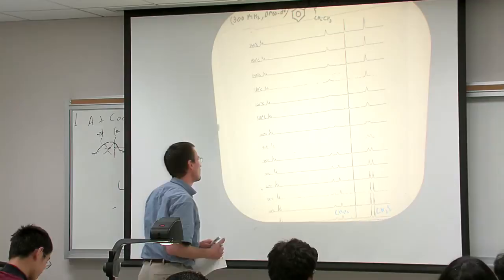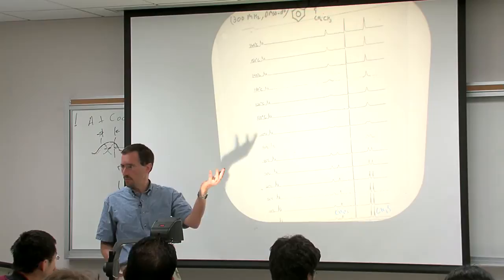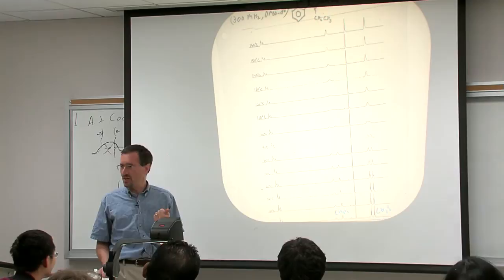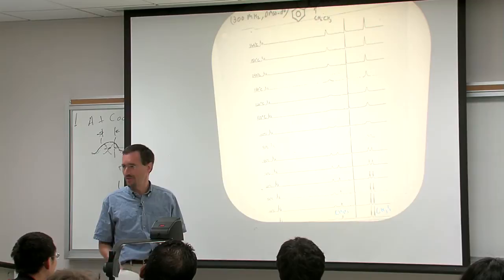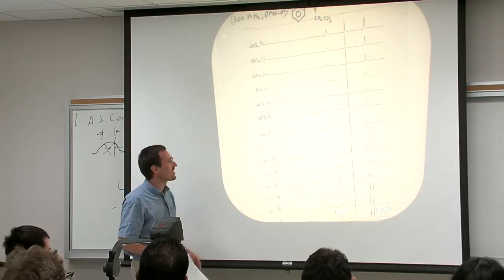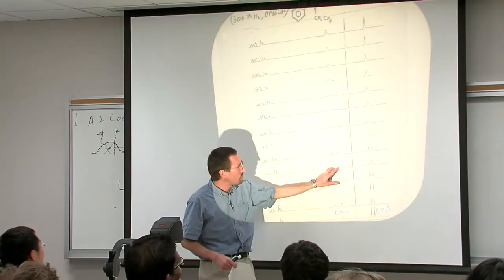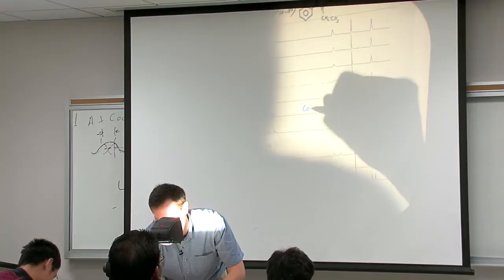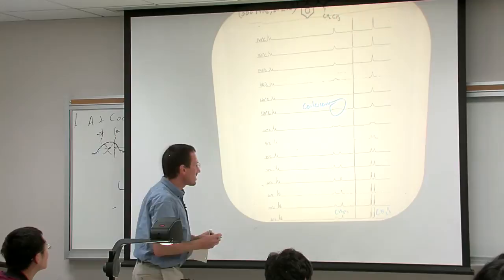This was a sample in DMSO-d6. DMSO has a very high boiling point so you can heat it to high temperature. Deuterochloroform boils at around 66 degrees — if you tried to heat it to 160 in an NMR tube, you'd either just blow the top off the tube or, if you're not lucky, explode in the probe. Either way, you'd trash the NMR spectrometer. So as you warm it up, the CH2's coalesce and 110 degrees is really perfect for the coalescence temperature of the CH2's.